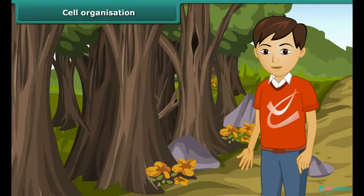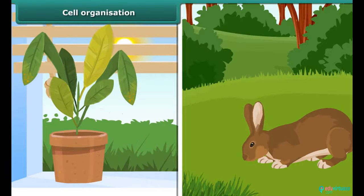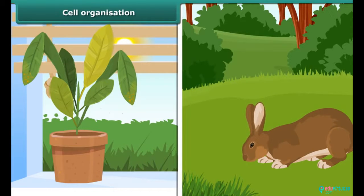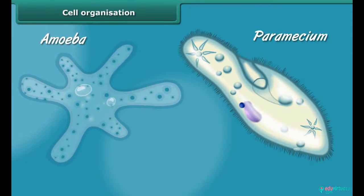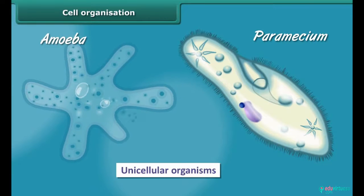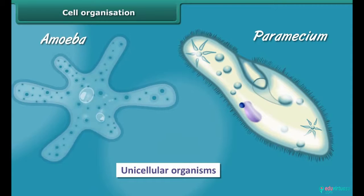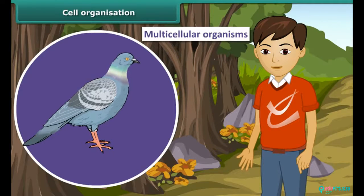All living organisms, plants or animals, are comprised of cells. They may be unicellular or multicellular depending on the number of cells in their body. Small organisms like amoeba and paramecium are made up of one cell — they are called unicellular organisms. Human beings, pigeons, and mango trees are made up of many cells, so they are called multicellular organisms.